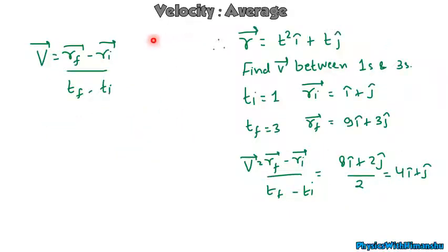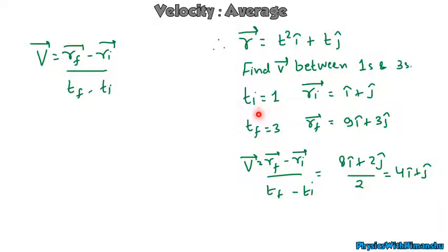Now let's come to velocity. Average velocity is displacement divided by time taken. Suppose initially the particle was at position ri and finally at rf. For a numerical: if position is t²·i-cap plus t·j-cap, find velocity between 1 second and 3 seconds. At t = 1s, position is i-cap plus j-cap. At t = 3s, position is 9·i-cap plus 3·j-cap. Velocity = (final position − initial position) / (final time − initial time), which gives 4·i-cap plus j-cap m/s.